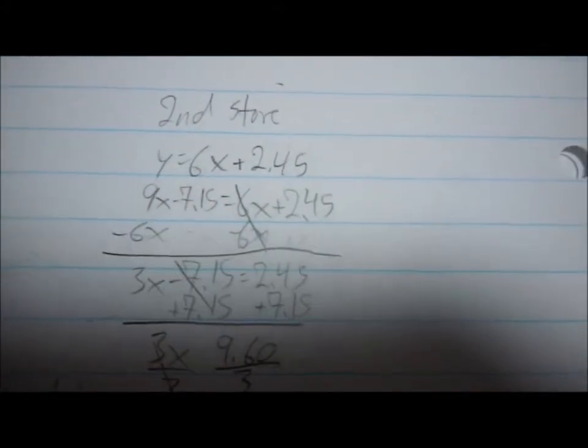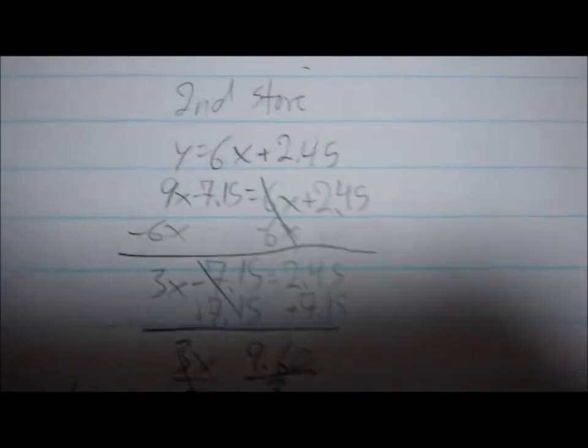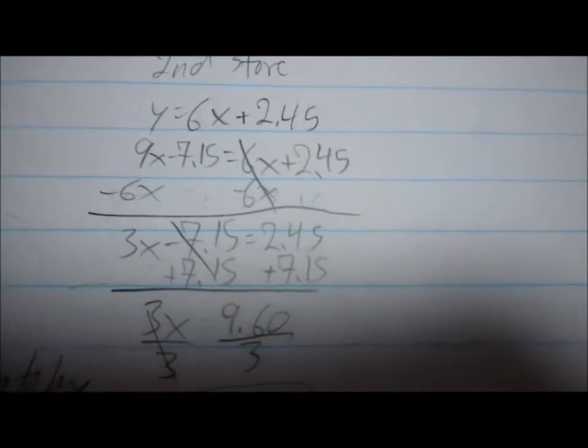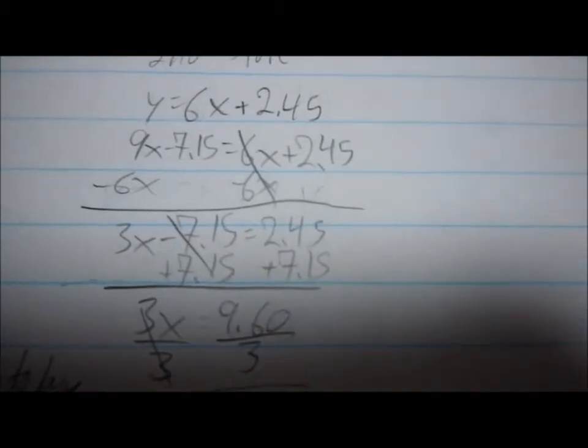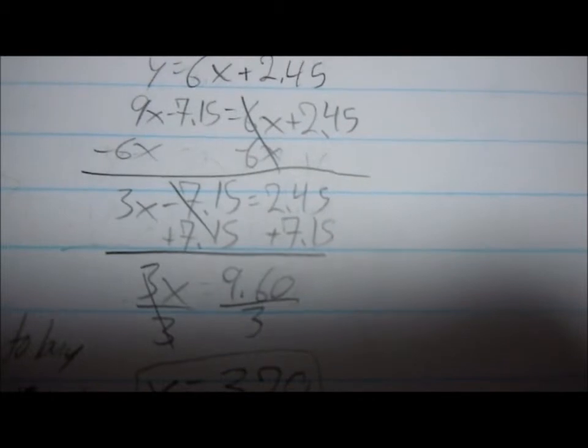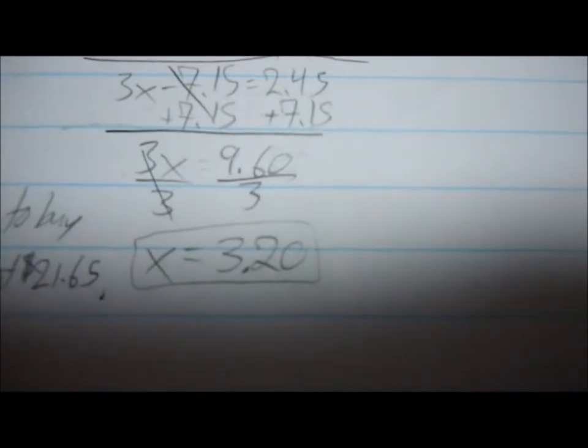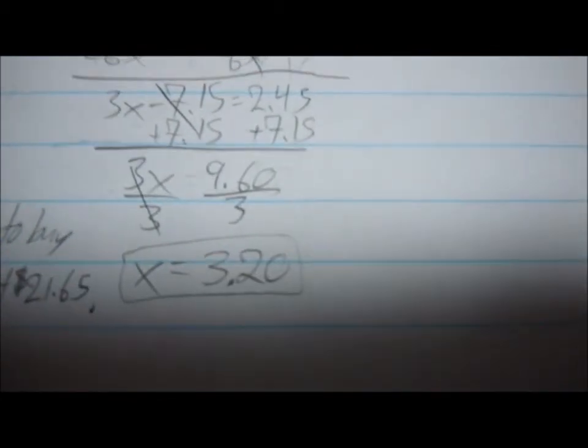And I try to get rid of the 6x. So I subtract 6x from both sides and get 3x minus 7.15 equals 2.45. And then I get rid of the 7.15 and get 3x equals 9.60. So I divide by 3 and get x equals 3.20 pounds.